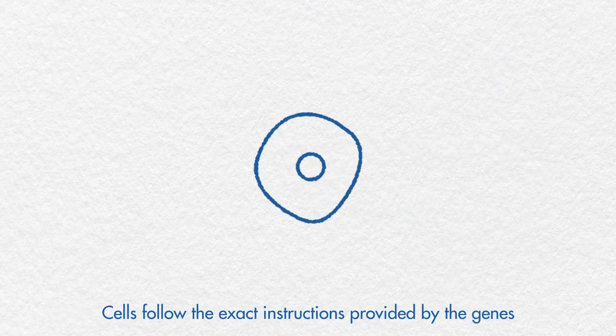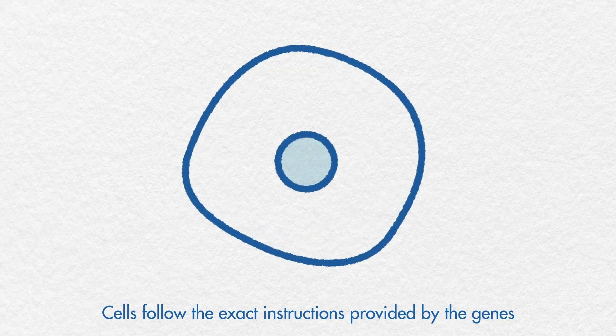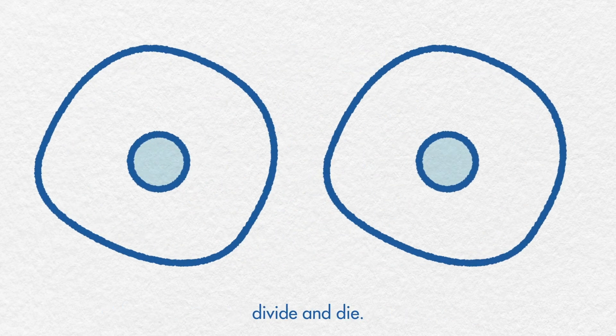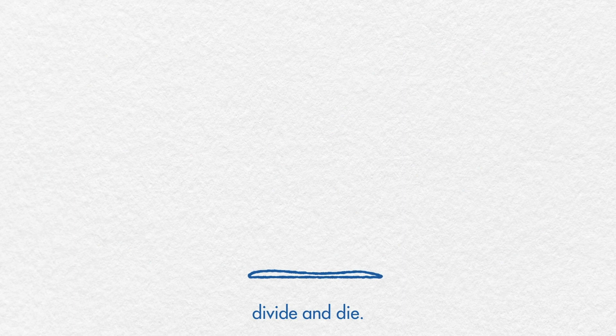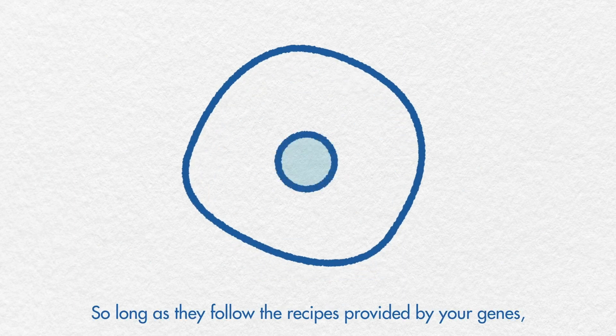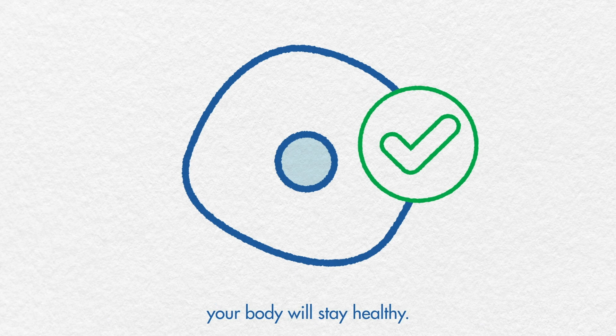Cells follow the exact instructions provided by the genes to know when to grow, divide and die. So as long as they follow the recipes provided by your genes, your body will stay healthy.